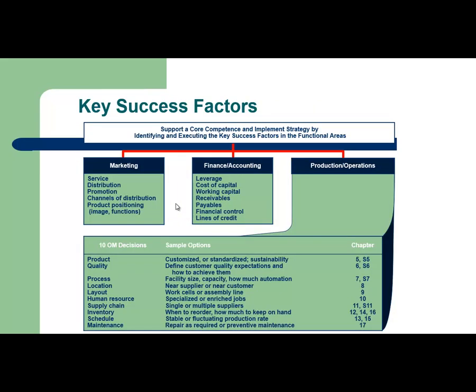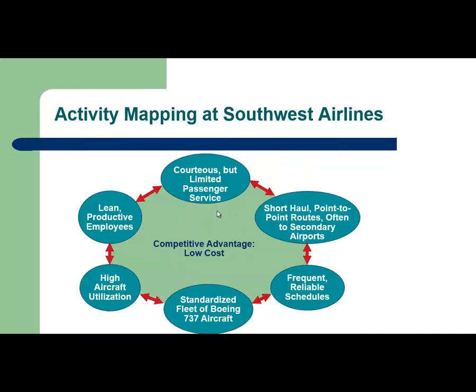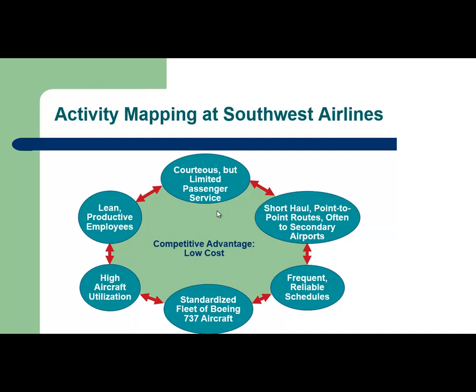This slide shows some of the success factors in the different functional areas and decision making areas. As an example of low-cost strategy, Southwest Airlines provided services and created their processes in a way to increase their competitive advantage. Southwest Airlines' customer service is courteous but limited — no seat assignment, bags fly free, no meals, automated ticketing, and no baggage transfer.